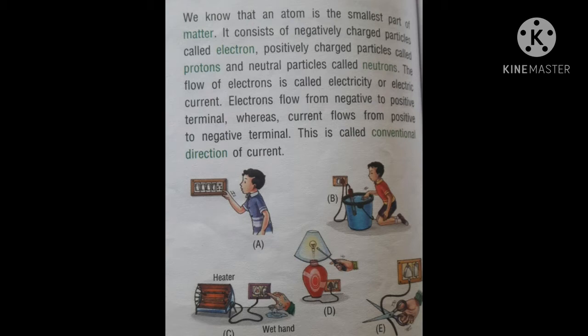The flow of electrons is called electricity or electric current. Electric current can be defined as the flow of charge. Out of these particles, electrons are movable. So the flow of electrons is called electric current.